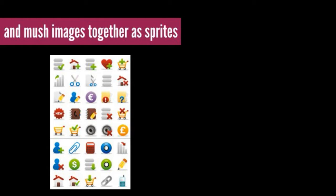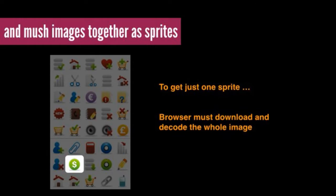We do similar things with images — we take small images and build them into sprites because icon images are only a couple of KB. But then to get just one image, we have to decode the whole sprite sheet. The browser will cache the whole sprite sheet on disk, but every time it wants an image, it may have to decode the entire sheet. If memory gets tight in cache, it may have to kick it out and decode it again.